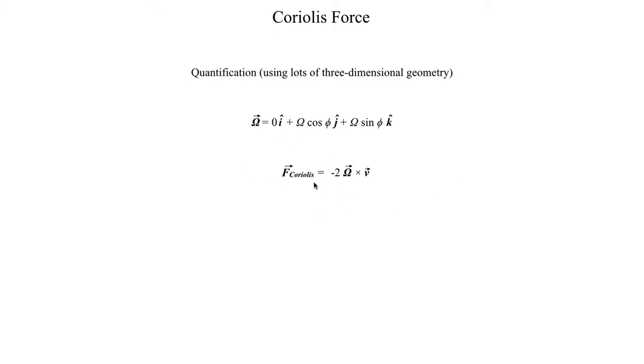So if our Coriolis force is defined as minus 2Ω cross the velocity vector, then we can resolve the components of the Coriolis force by evaluating this cross-product. Keeping in mind that our velocity vector is equal to this, we know what this vector is and we know what this vector is, so now we can actually go and evaluate that cross-product.